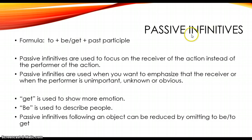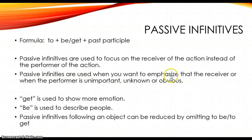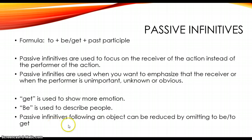Now let's look at passive infinitives. The formula for passive infinitives is: to plus be or get plus the past participle. Passive infinitives are used to focus on the receiver of the action instead of the performer of the action. They are used when you want to emphasize that the receiver or the performer is unimportant, unknown, or obvious. We use 'get' when we want to show more emotion, and 'be' is used to describe people. Also, passive infinitives following an object can be reduced by omitting 'to be' or 'to get.' Let's look at some examples.